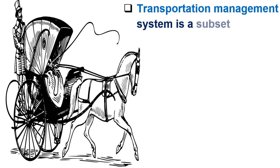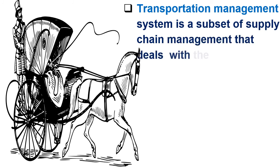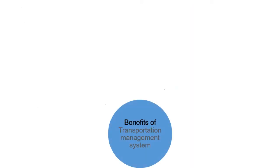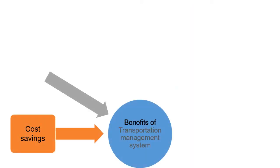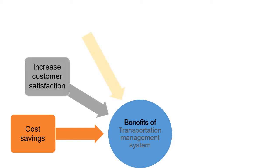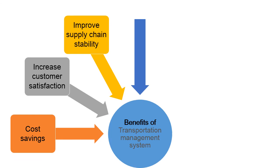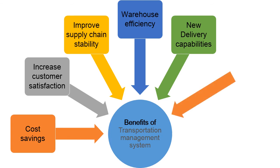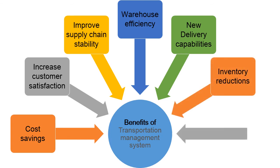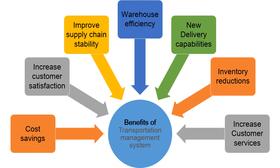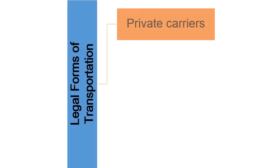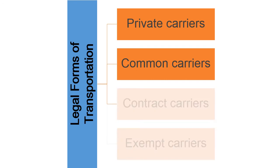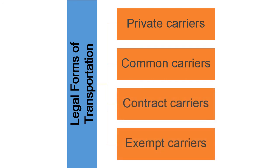Transportation Management System is a subset of supply chain management that deals with the planning, execution, and optimization of the physical movement of goods. Benefits include: cost savings, increased customer satisfaction, improved supply chain stability, warehouse efficiency, new delivery capabilities, inventory reductions, and increased customer service. Legal forms of transportation are: Private carriers, Common carriers, Contract carriers, Integrated carriers, and Exempt carriers.